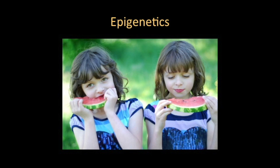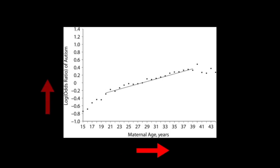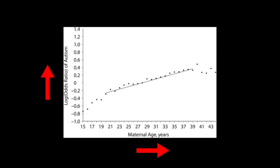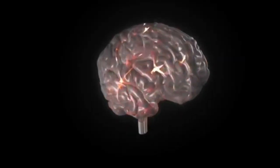However, genes don't tell the whole picture. Twin studies suggest that even with the same genetic package, it is possible for one twin to show no symptoms, suggesting that epigenetics may also play a role. There are also risk factors associated with an increased probability of conceiving a child with autism — for example, older parents may have mutations in their reproductive cells that can predispose a child to autism.